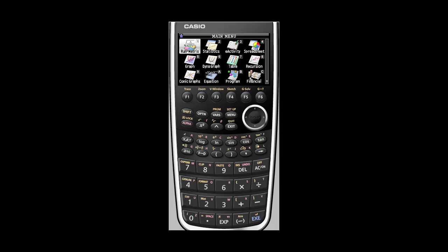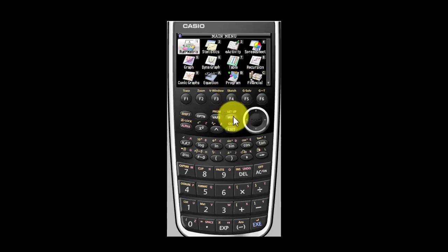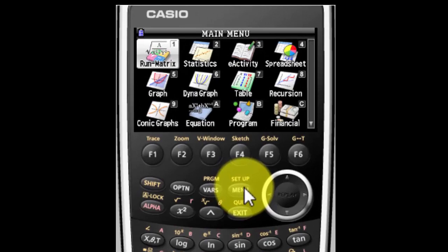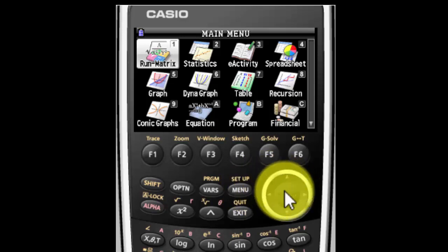First thing you're going to do is turn your calculator on. If you don't see this screen, go ahead and hit your menu button right here. That'll get you to this screen. Your calculator may look slightly different from mine. That's okay. Once you know how to work one Casio graphing calculator, you'll know how to work all of them.